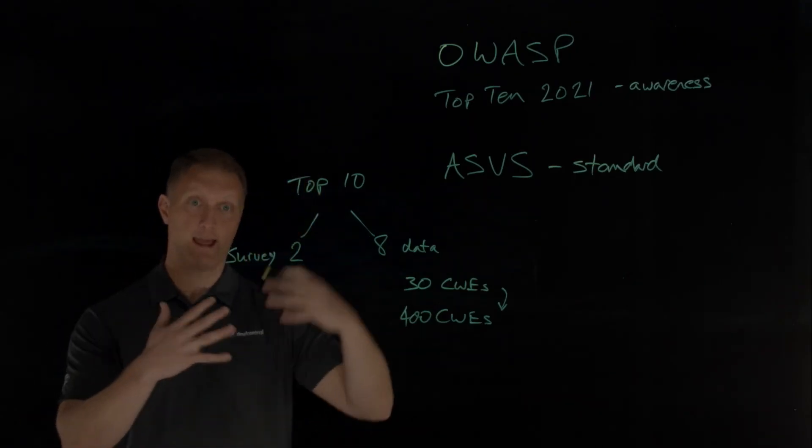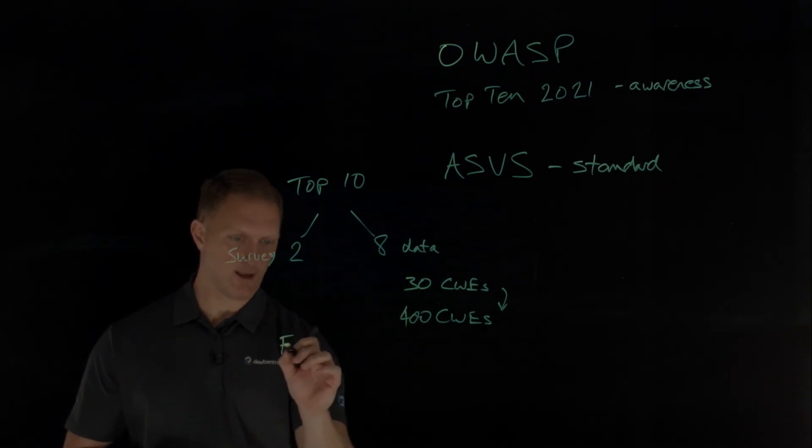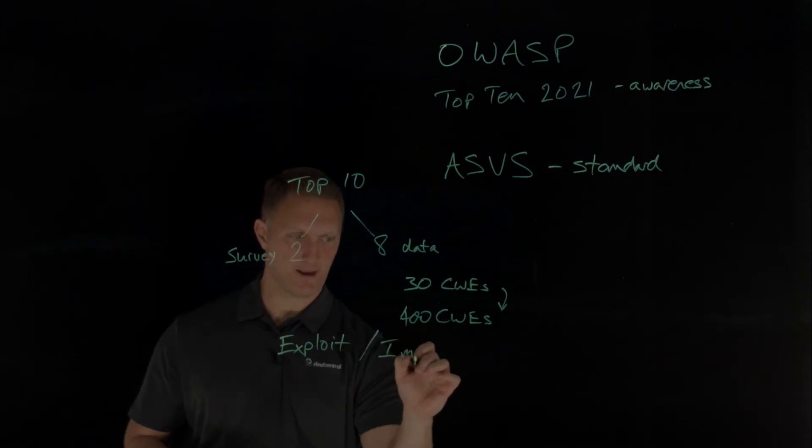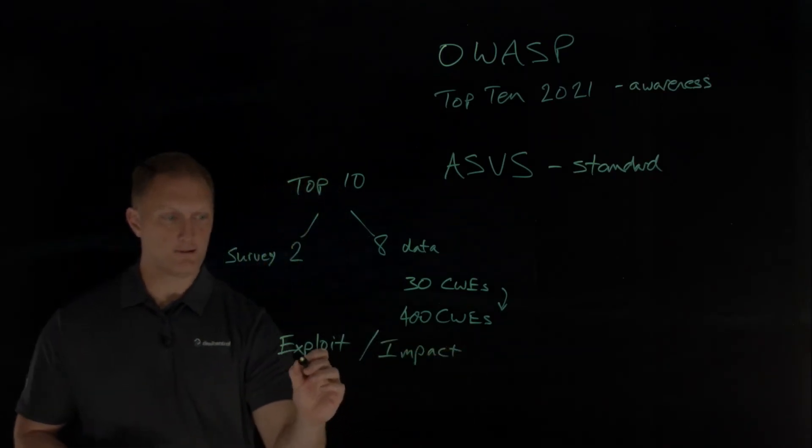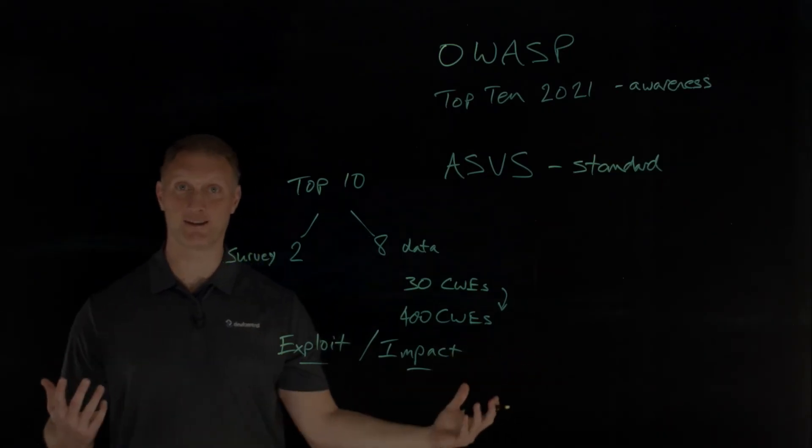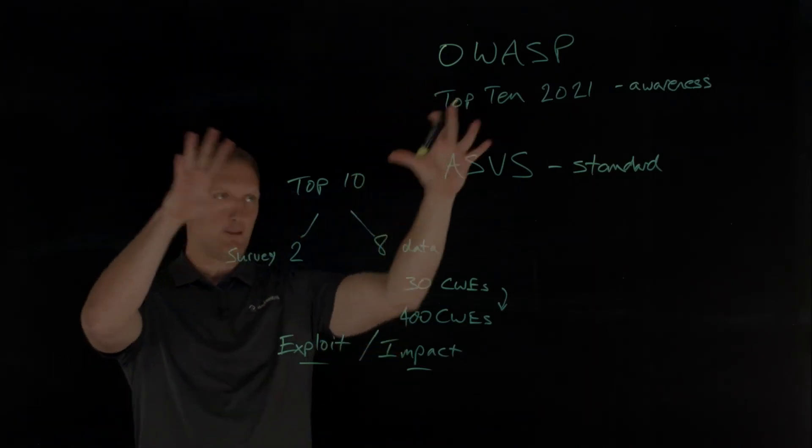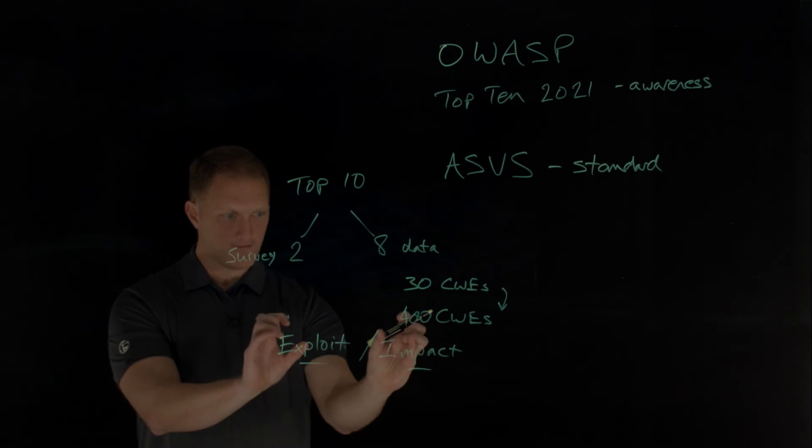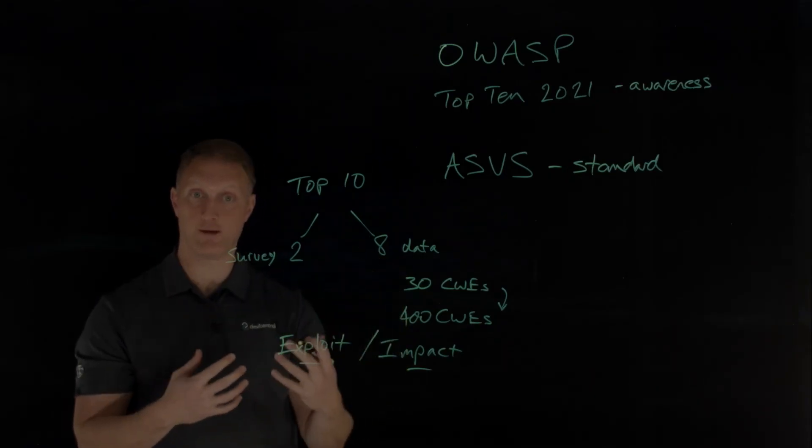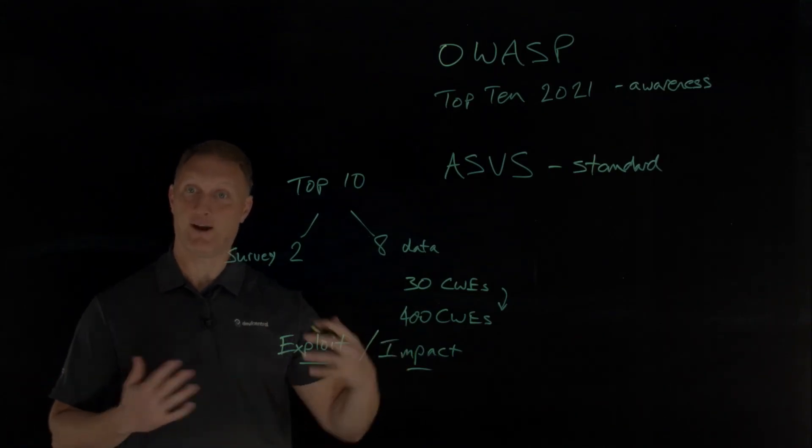They had lots of data to analyze and ultimately they boil it all down. They look at a couple of different things when generating the list of top 10. As they mine through this data, they look at exploit and impact. The exploit is how easy is this thing to exploit, and the impact is what's the impact of this security risk, the technical impact. They went through all of these steps, mined through all this data, focused on the root cause as much as they could on these CWEs, looked at the exploitability of these security risks, and then looked at the impact that these security risks could have. They finally landed on the top 10.